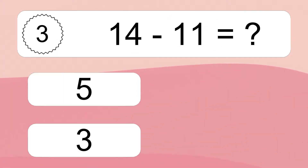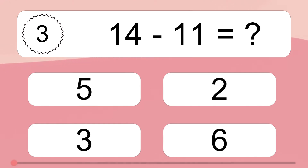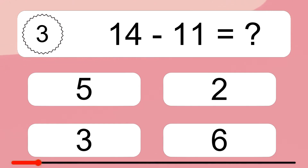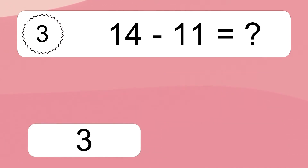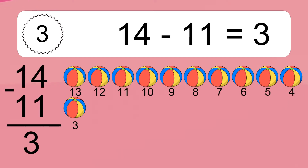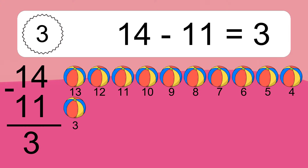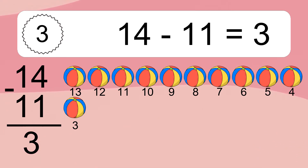14 minus 11 equals what? 14 minus 11 equals 3. Let's count it: 13, 12, 11, 10, 9, 8, 7, 6, 5, 4, 3.